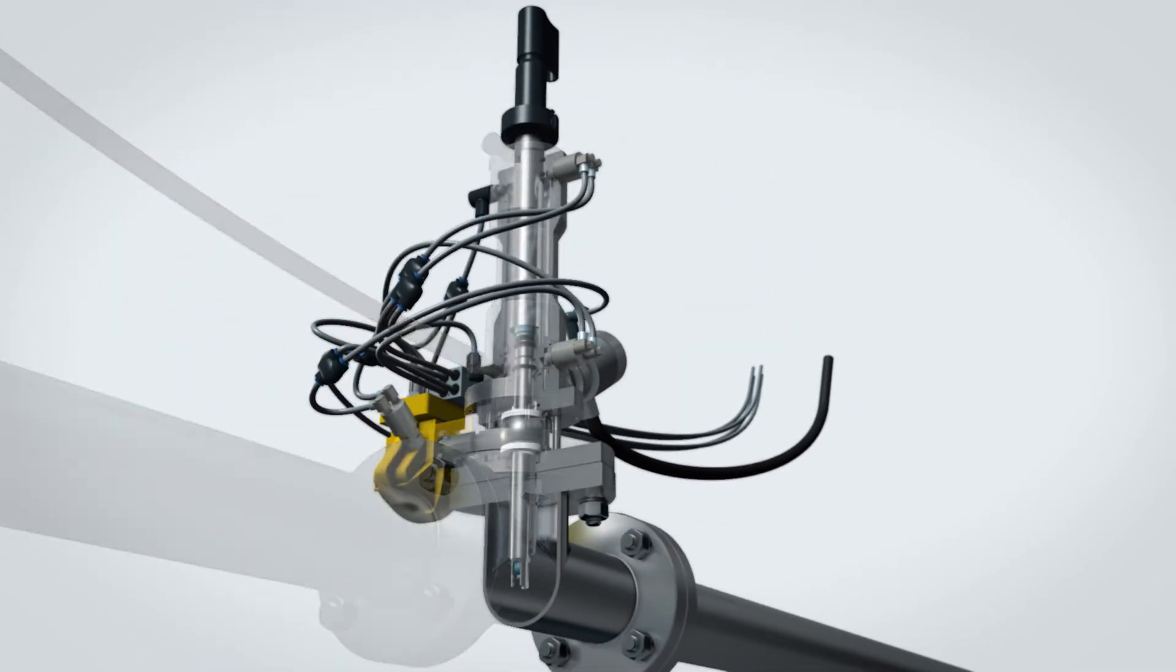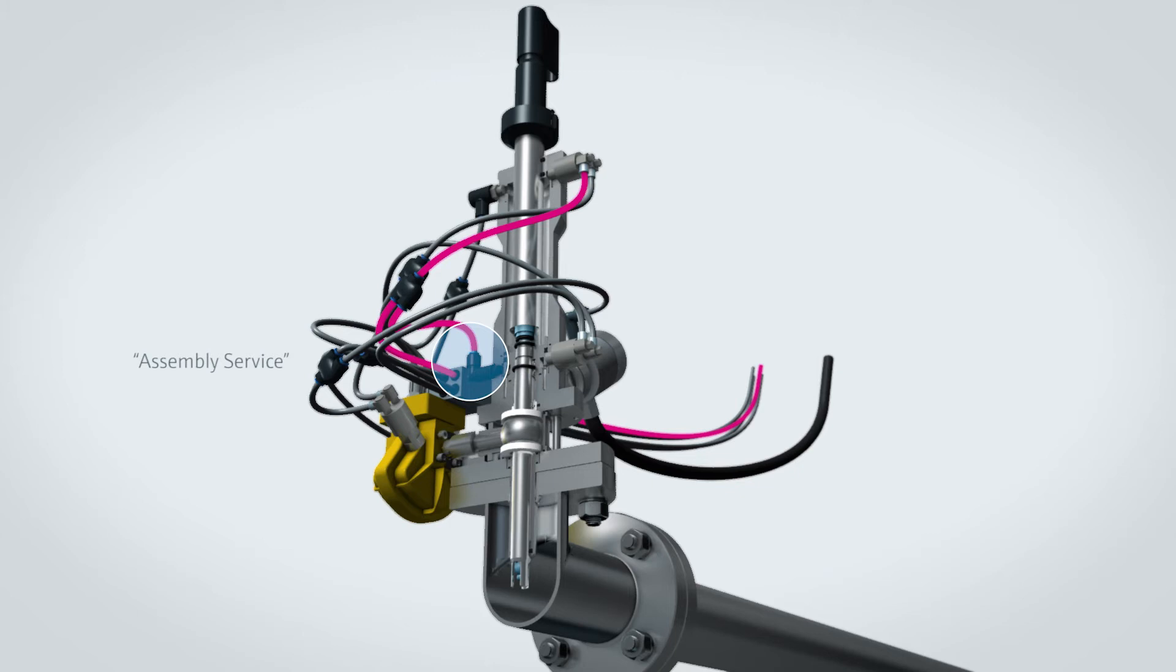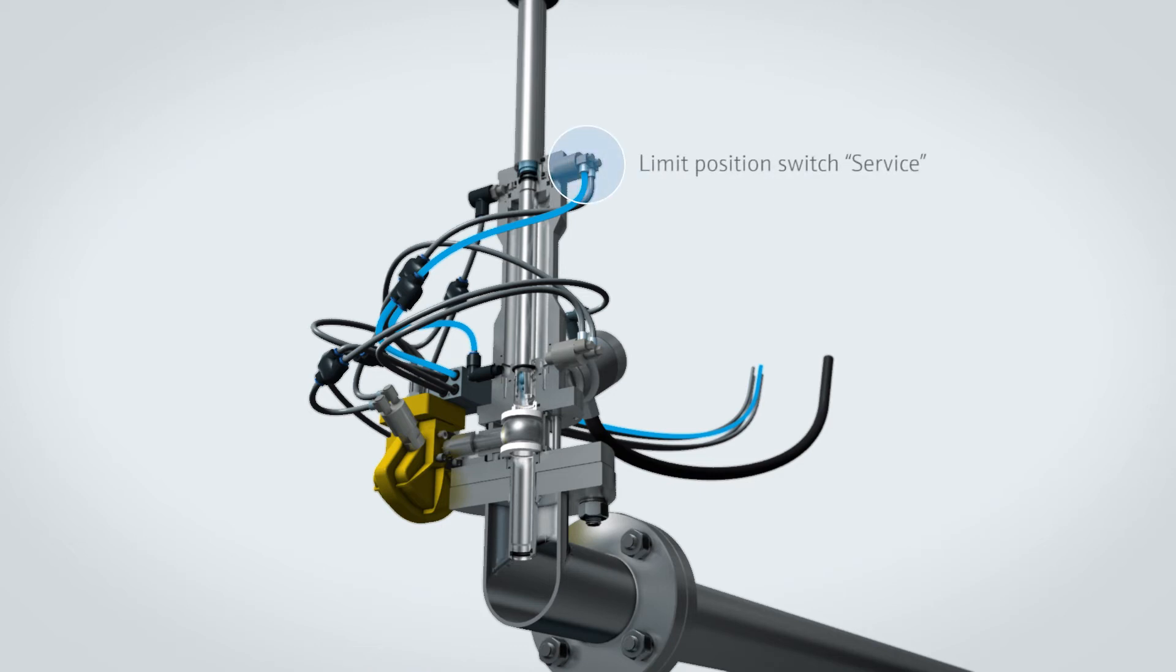In order to move the sensor, compressed air is simultaneously applied to the assembly service inlet and the service pneumatic limit position switch. The sensor holder with the sensor moves out of the medium and into the assembly. When the sensor holder reaches the limit position, the pneumatic limit position switch opens.